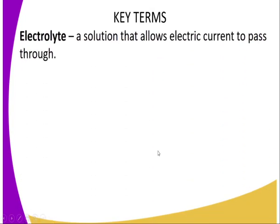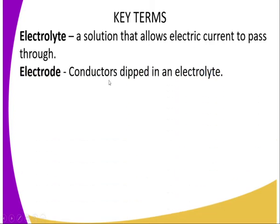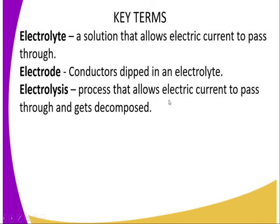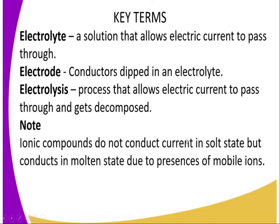So which are the key terms to recall when it comes to electrolysis? We have an electrolyte, which we refer to as a solution or an ionic compound in a molten state that allows current to pass through. Term number two, we have an electrode — these are conductors which have been dipped in an electrolyte, basically to allow contact between ions and electrons to flow through the electrolyte. We also have electrolysis, which is the process through which current is passed through an electrolyte and the electrolyte gets decomposed. We should note that ionic compounds do not conduct current in solid state, but conduct in the presence of mobile ions, that is, in molten state.